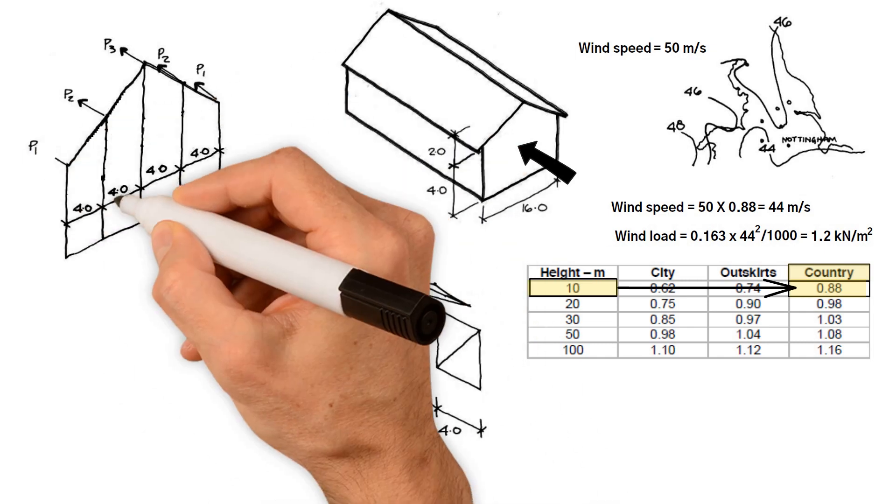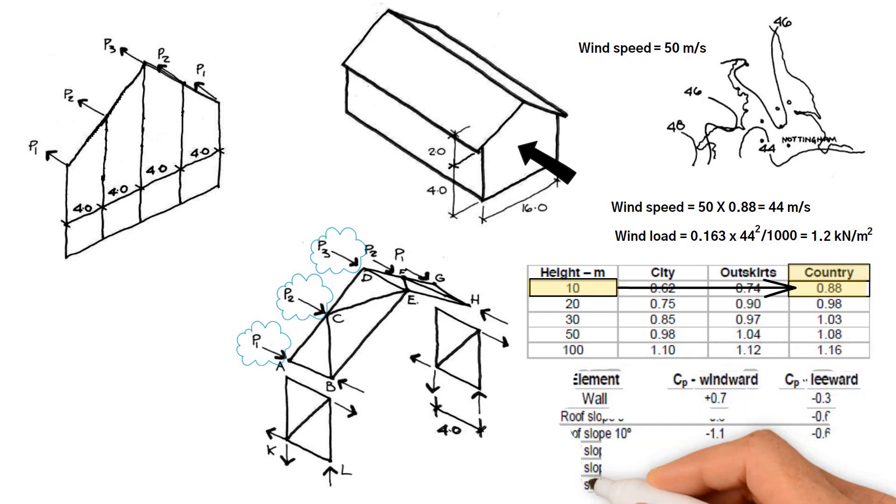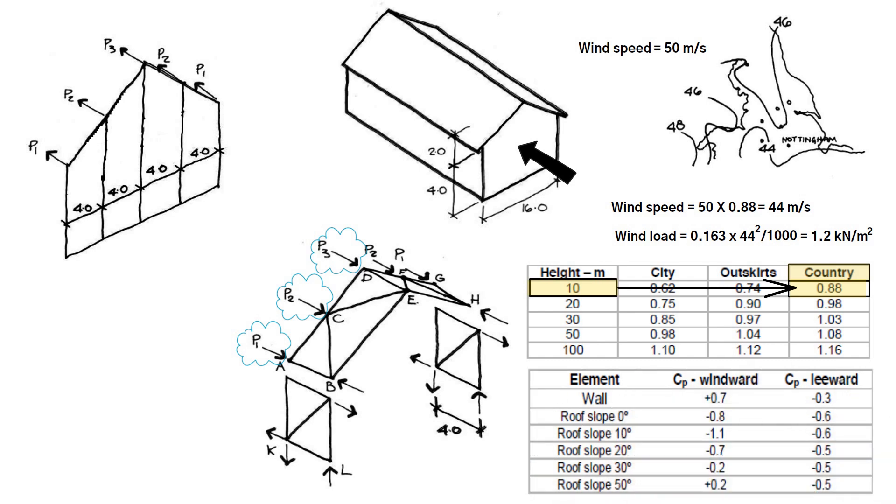Secondly, we need to work out forces P1, P2, and P3 on the bracing structure. However, we need to identify a pressure coefficient from the table for the windward and leeward sides. We can note it is a positive 0.7 and negative 0.3 respectively.